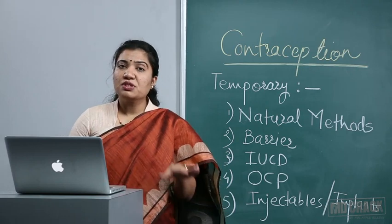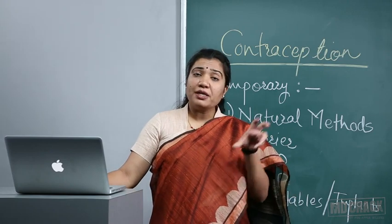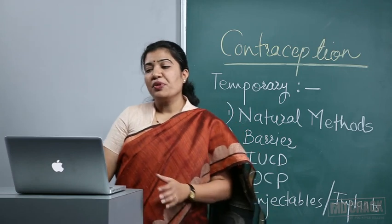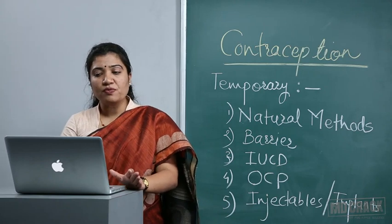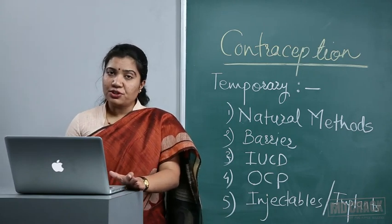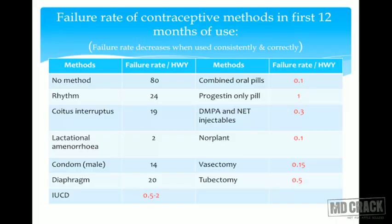From an MCQ perspective, failure rates of all contraceptive methods are important — which has the lowest, which has the highest, which is better during lactation, which is suitable or contraindicated in cardiac patients. Clinical scenarios may also be asked, such as choosing a contraceptive for a woman who has just delivered. If no method is used, the conception rate is around 80%.